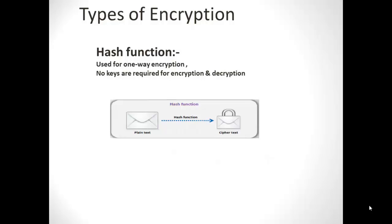The third type of encryption is the hash function, which is actually a one-way encryption and does not require any keys. Hashing is the process of taking a large body of data and reducing it into a small body of data. This small body of data is known as the hash value, which uniquely identifies the original large body of data.